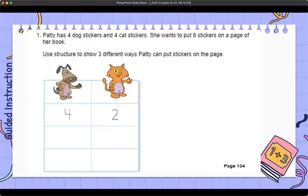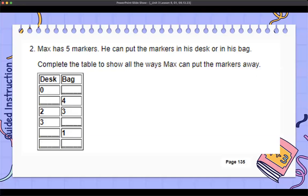For guided instruction here again, Max has 5 markers. He can put the markers in his desk or in his bag. Complete the table to show all the ways Max can put the markers away. So if you need to, please do this on your whiteboard, use manipulatives, talk it out with your learning coach. Again, the more descriptive words you use, the better they will become at writing and describing and explaining their thought process. Pause and work it out with your learning coach.